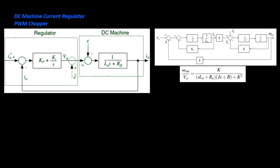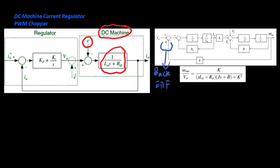If the inertia of the machine and load is large enough to consider back EMF as constant in the design of the current regulator, then the machine can be modeled as a simple RL load with constant disturbance voltage E. If the back EMF voltage can be estimated from the speed of the machine and back EMF is constant, then by feedforward compensation the disturbance due to back EMF can be rejected perfectly.